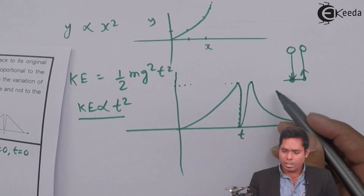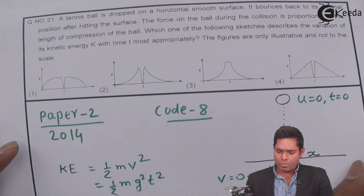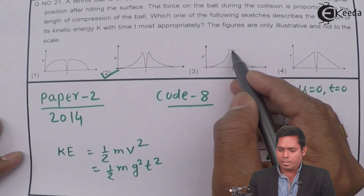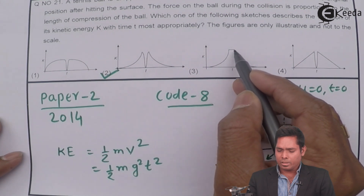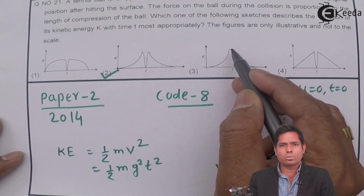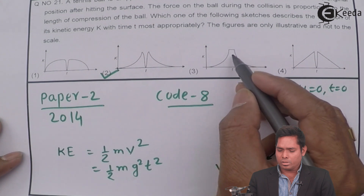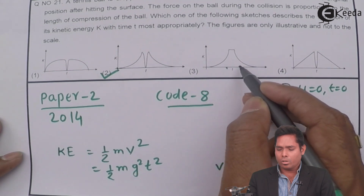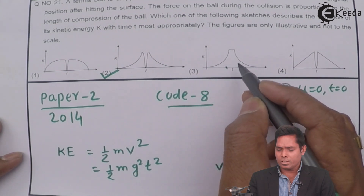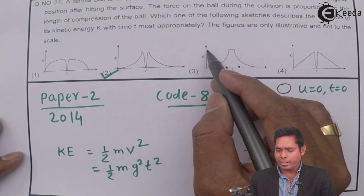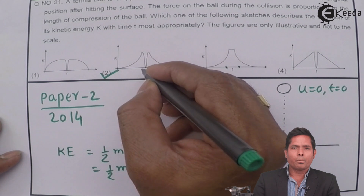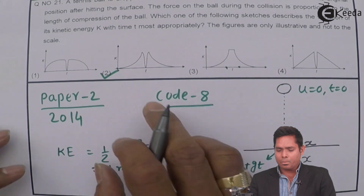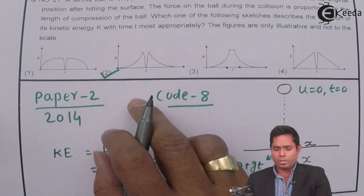So the kinetic energy decreases to zero during contact and then increases again. This is the correct situation. Option 3 is not correct because it shows kinetic energy remaining at maximum during contact and never reaching zero — but in practice the ball must come to rest momentarily during the collision. Therefore, option number 2 is the correct answer to this question.